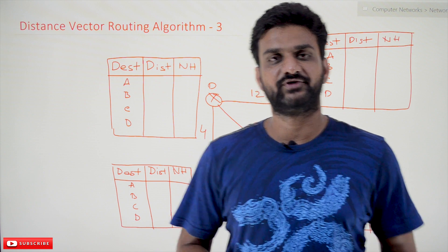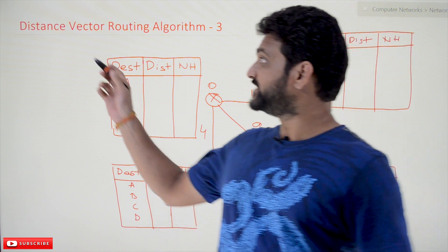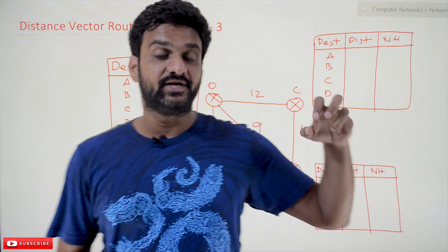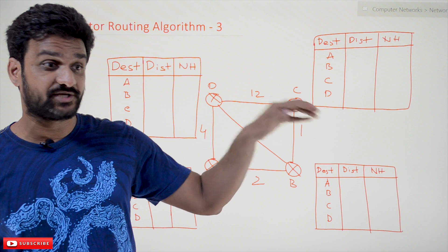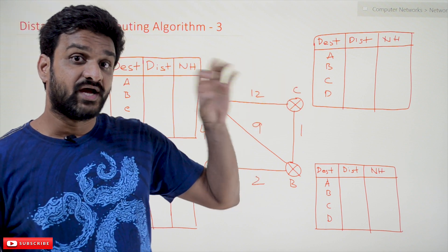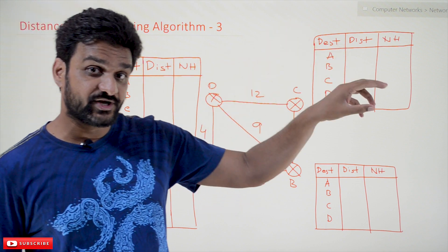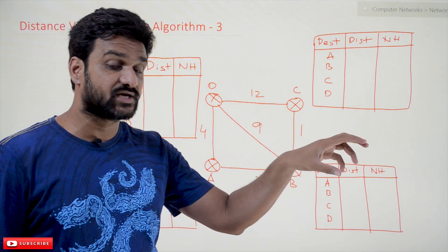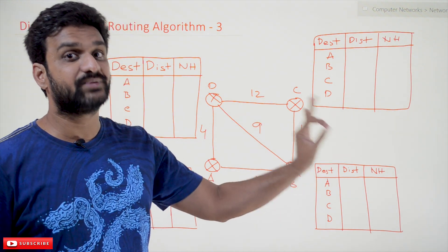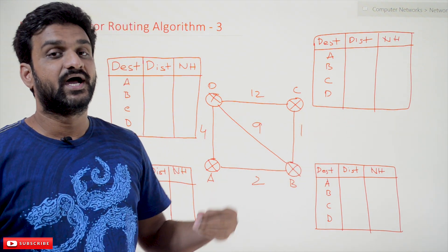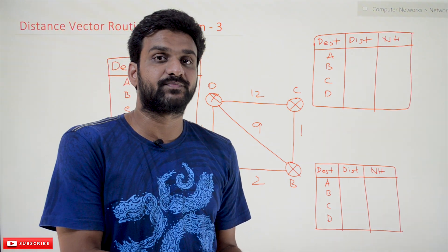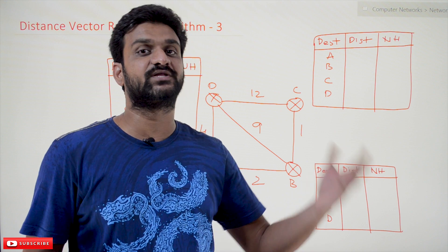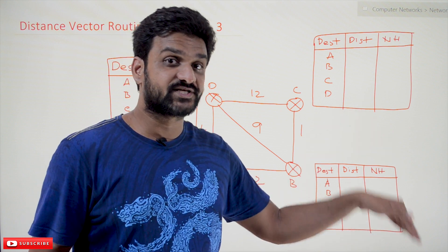Hi, welcome to Learning Monkey. I am Vikram. In this class we'll try to understand distance vector routing algorithm part 3. The first part and the second part in our previous videos we have discussed clearly about the algorithm, the steps of the algorithm, and how to find the routing tables at each and every router. If you haven't watched those videos, please watch them and come back. Every video in our channel is part of an entire course or playlist — our suggestion is to follow the entire course for better understanding. The link for the playlist is provided in the description below.